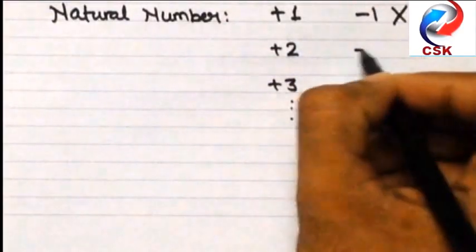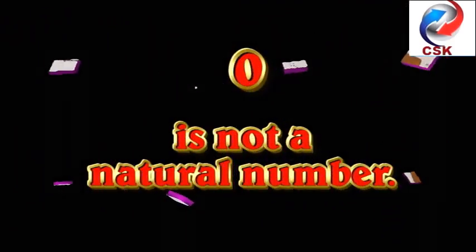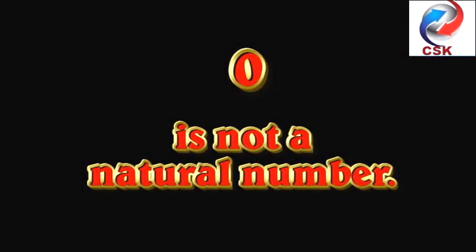But minus 1, minus 2, minus 3, all these numbers cannot be a natural number because these are negative numbers. Even 0 is not a natural number.